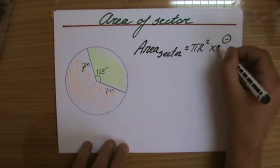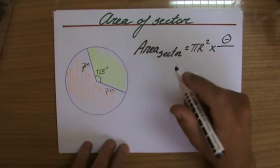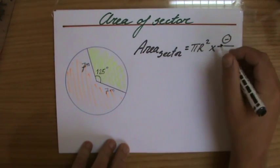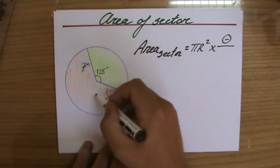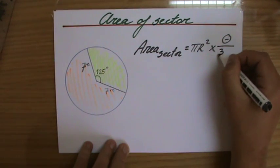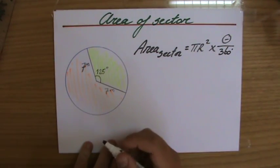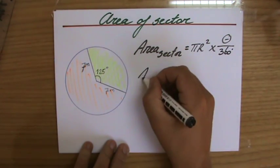And I always say, well that's the angle theta - that's a Greek letter theta, but you can say x, a, b, whatever - out of, well, how many degrees do you have in a full turn? 360 degrees.